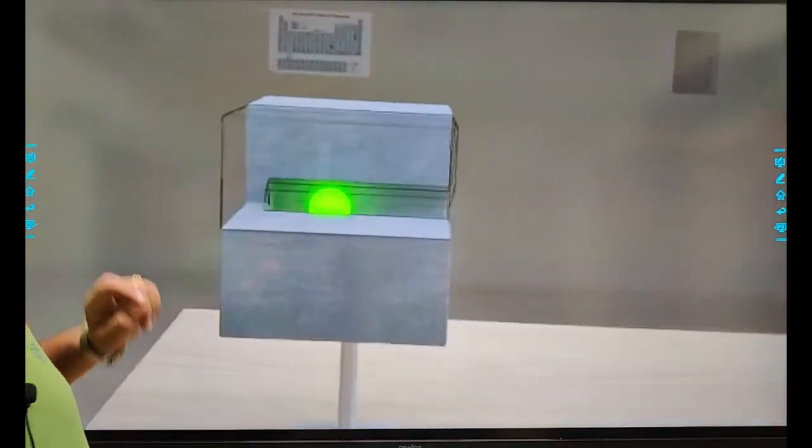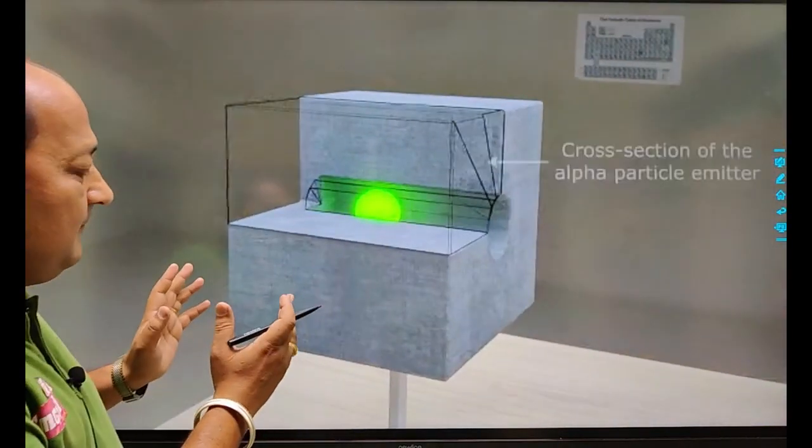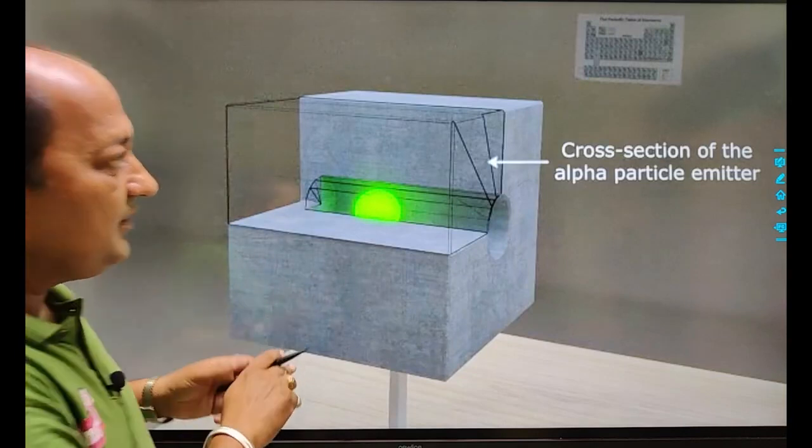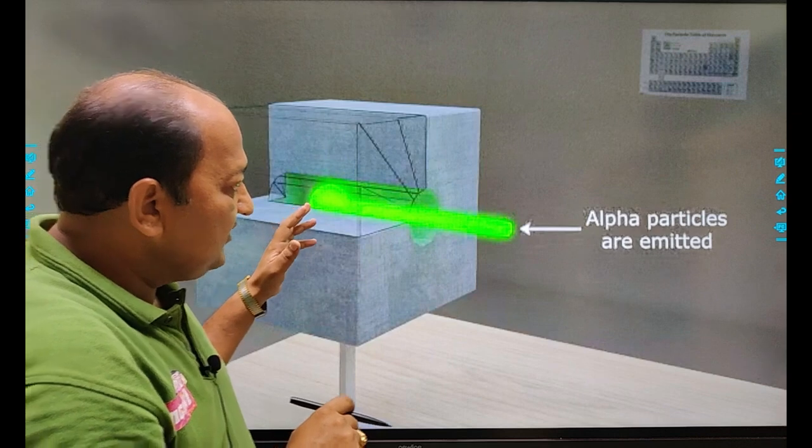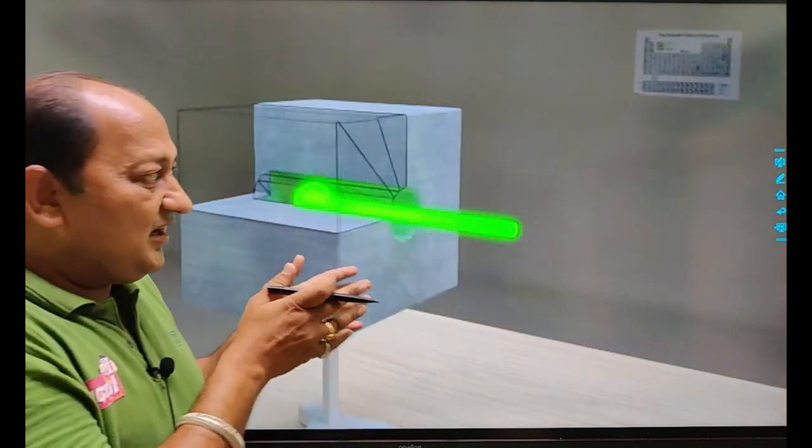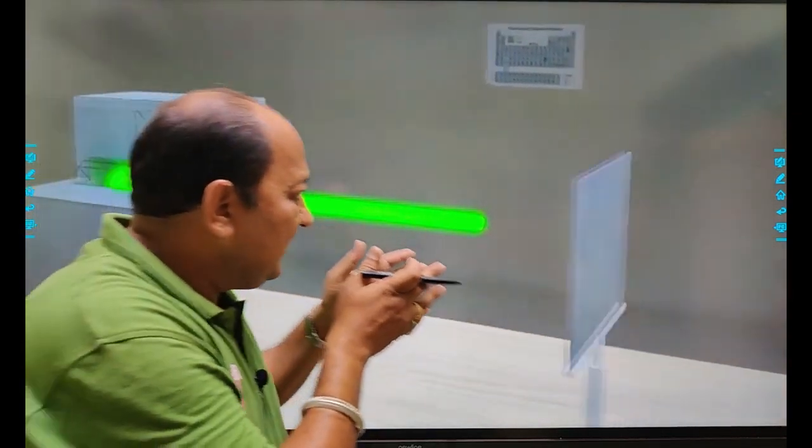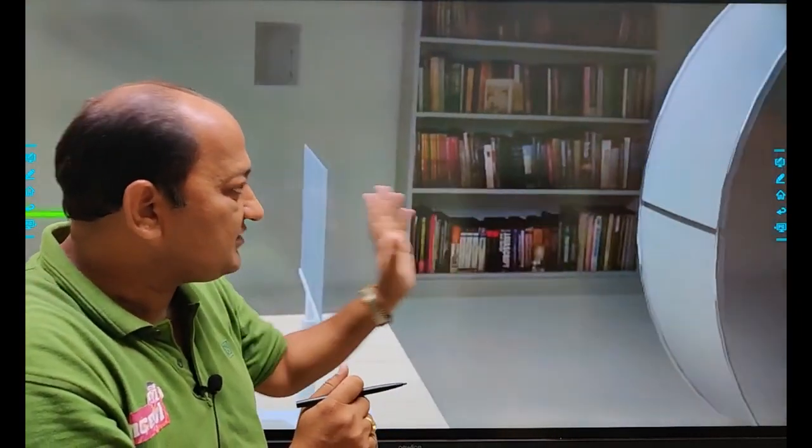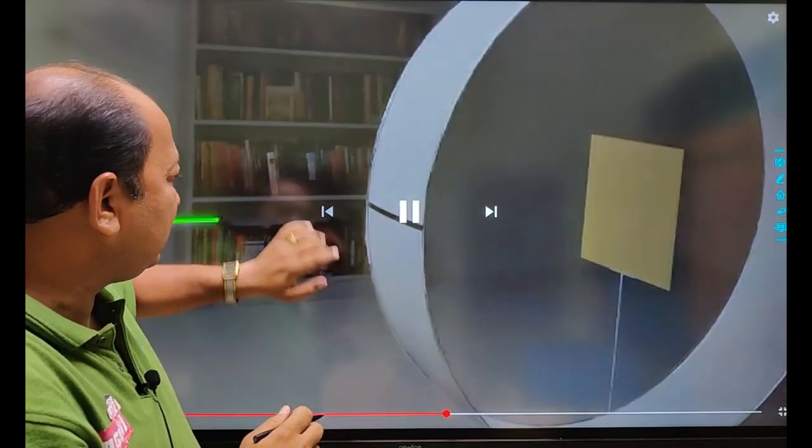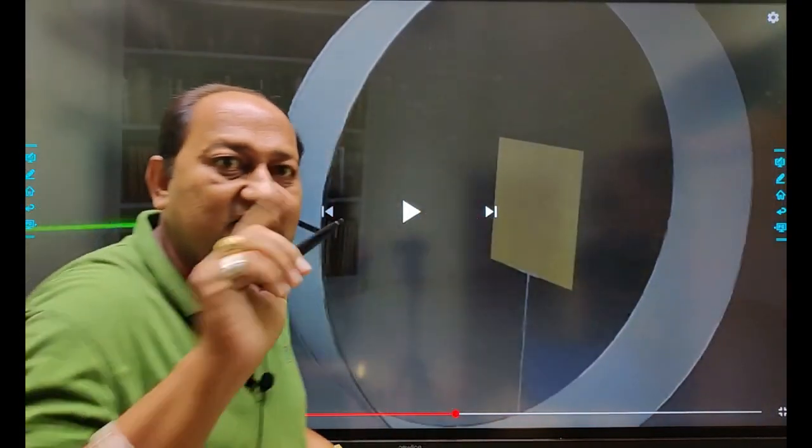This is the alpha particle emitter and this is the cross section of the alpha particle emitter. The intensity of alpha particles is increased as they pass through the slits and now they enter the fundamental section.